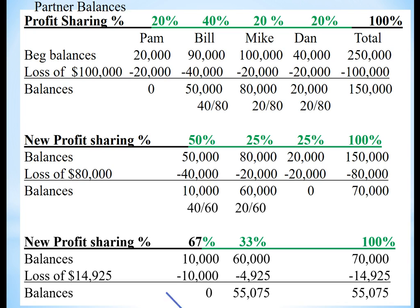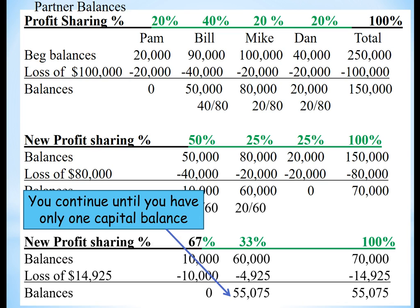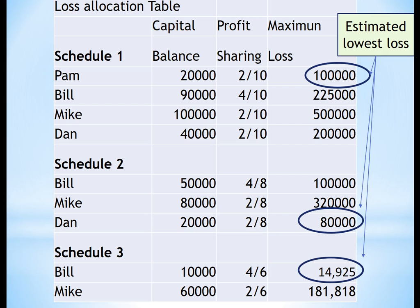Now we can do our redistribution plan. But first, this is our loss allocation table, which you're asked to do on your homework. As you can see, Schedule 1, Schedule 2, Schedule 3 show how the profit sharing changes based on the remaining percentages. I have circled the estimated lowest loss, which is going to be used for the allocation for each schedule.